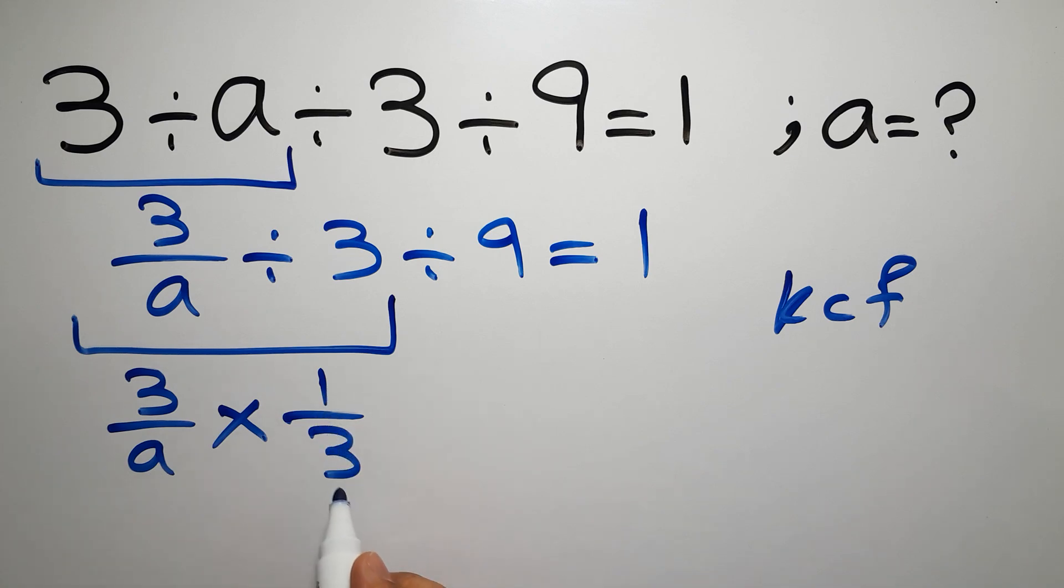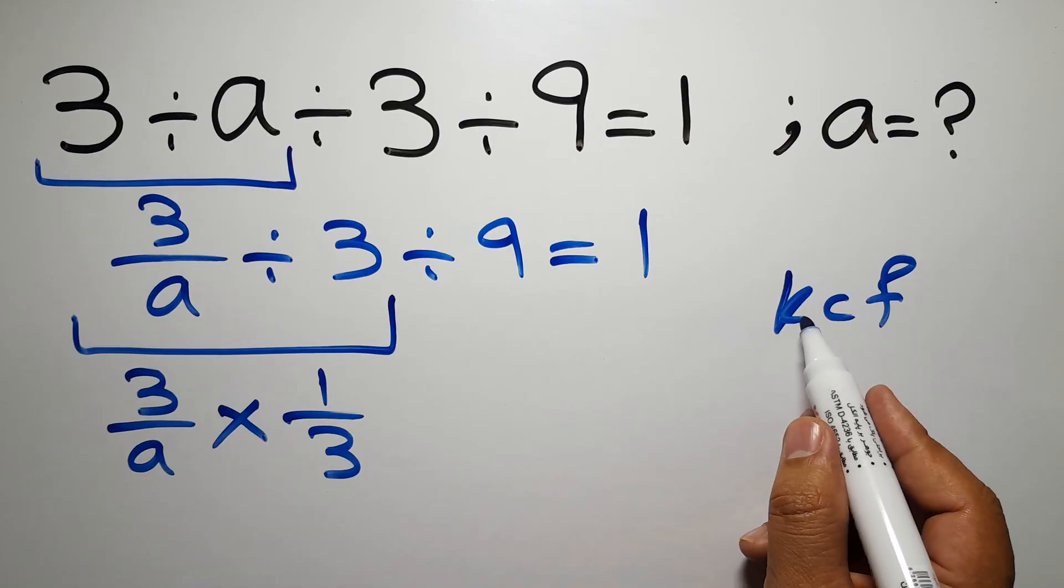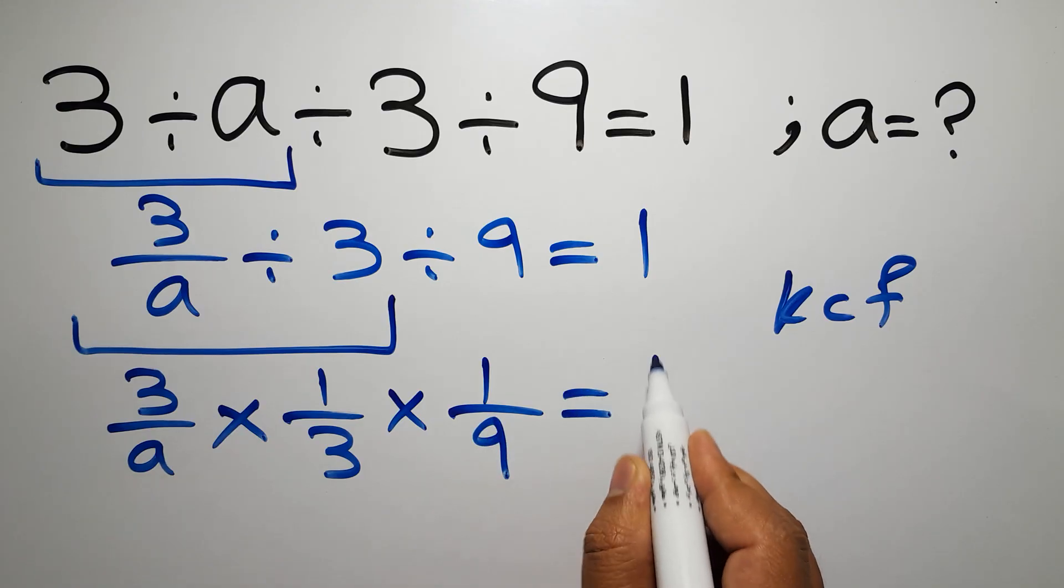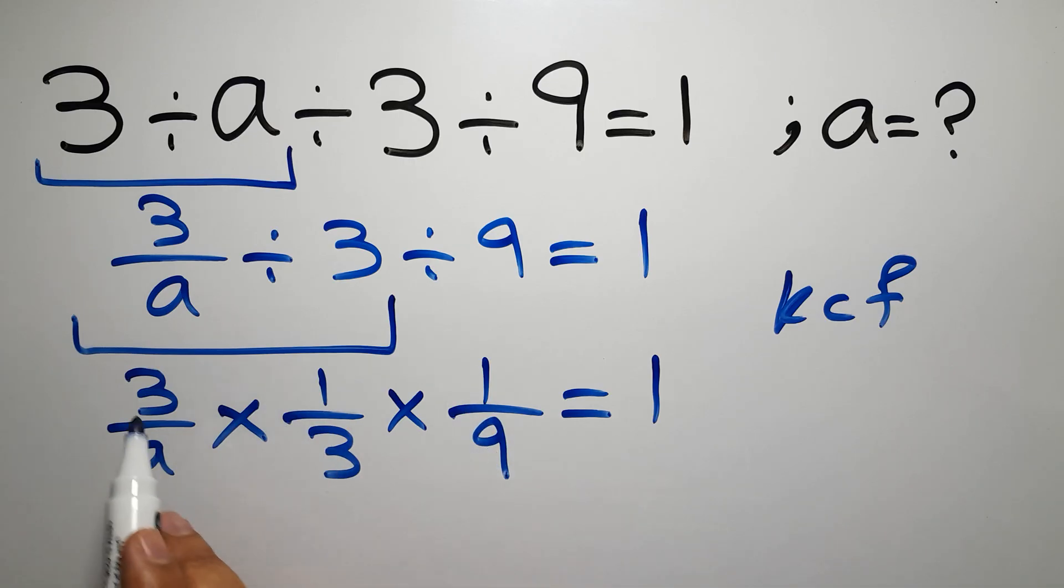Here we have divided by 9. Again we can apply the KCF rule, so times 1 over 9 equals 1. Now we have this fraction times this fraction times this fraction. 3 times 1 times 1 equals 3.